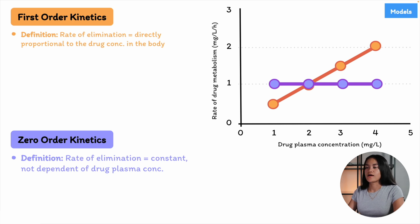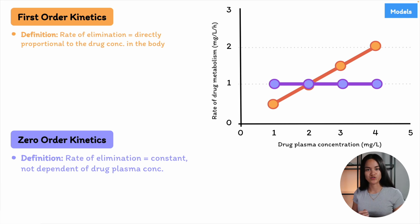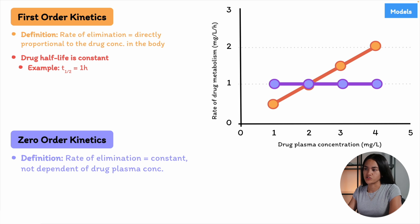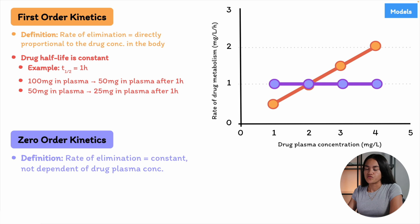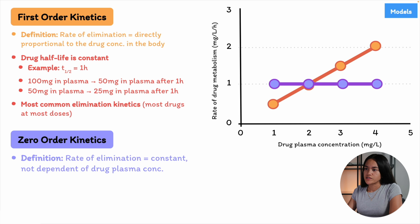Now let's bring in the drug half-life. We've defined it as the time to eliminate 50% of the drug plasma concentration. For first-order kinetics, the drug half-life remains constant. For example, with a one-hour half-life starting at 100 mg of drug in the blood, after one hour we have 50 mg, and after another hour we have 25 mg. The drug half-life is constant only for first-order elimination kinetics — we cannot calculate a constant half-life for zero-order elimination kinetics. The most common elimination kinetics are first-order, applicable for most drugs at most doses.